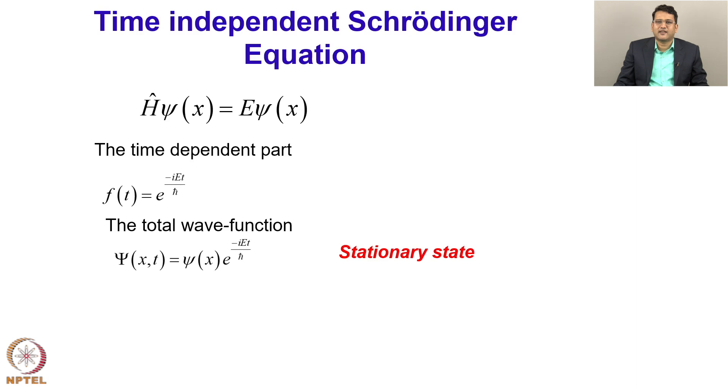Now, when I say stationary state, it does not mean that my wave function is not evolving in time. It is still evolving in time, but the way it is evolving in time is that my probability density psi star psi does not contain any time part because the exponential factors actually cancel out each other. So, the probability density does not change in time, that is why they are called stationary states.